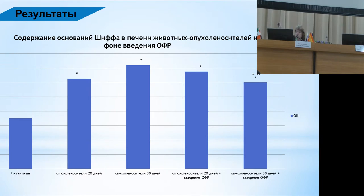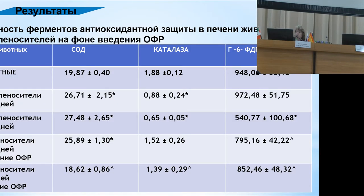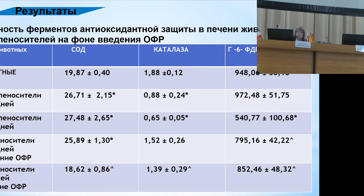You can see growth in 20-day and 30-day tumor carriers. Regarding antioxidant enzyme activity: the activity of superoxide dismutase goes up in animals with 20-day and especially 30-day tumors. This has to do with adaptation processes happening within the body — the liver is not damaged and it starts fighting against processes occurring under the influence of tumor-produced toxins. However, malfunction in the antioxidant system happens because the activity of catalase goes down by two times in the 20-day period and even further in the 30-day period.